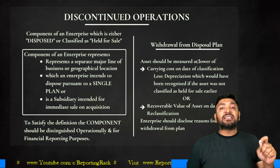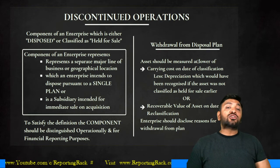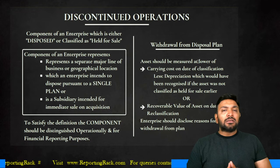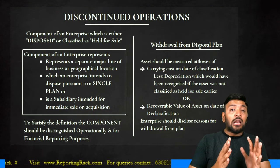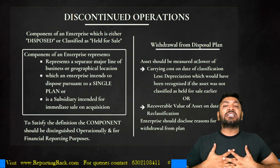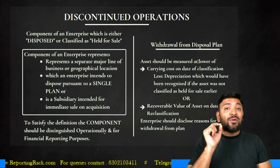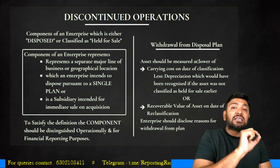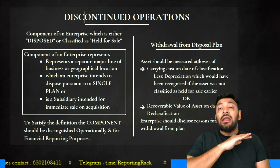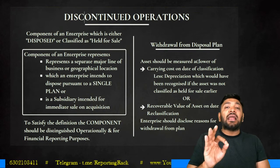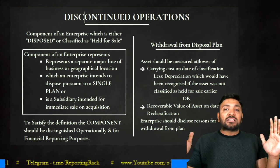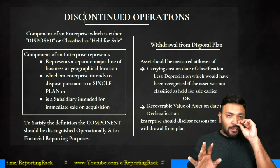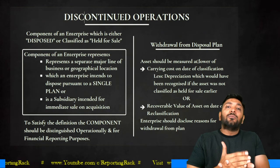Moving to discontinued operations: there is a significant difference from AS24. Under AS24, the standard applied over the entire period of discontinuance — from the decision to discontinue through the process. Under Ind AS 105, the term is 'discontinued operation' — not 'discontinuing' — so the scope is narrower, and disclosures during the period of discontinuance are no longer required.